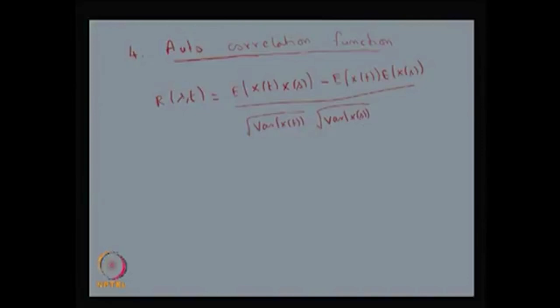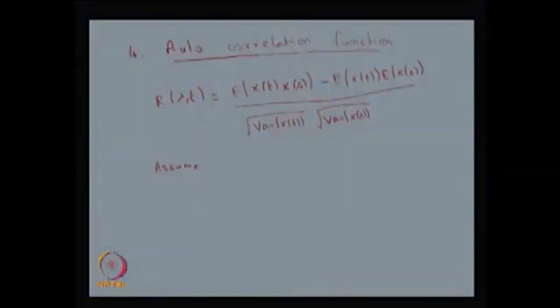This is denoted with the notation R and is called the autocorrelation function for the random variables x(t) and x(s). It basically describes the correlation between values of the process at different time points s and t. Sometimes we assume R(s,t) depends only on |t - s|. When discussing the stationary process, it depends only on the interval length, not the actual time.